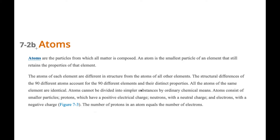Drawing on the concept of atoms coming from elements, atoms are the particles from which all matter is composed. The atom is the smallest particle of an element that still retains the properties of that element. There are about 90 different types of elements and therefore 90 different types of atoms. An atom consists of smaller particles: protons with a positive electrical charge, neutrons with a neutral charge, and electrons with a negative charge.